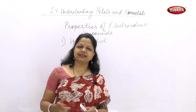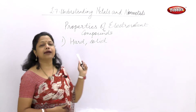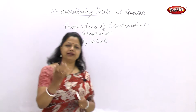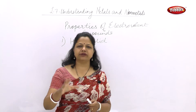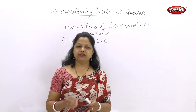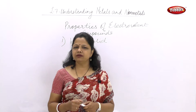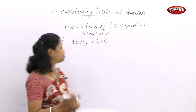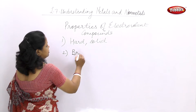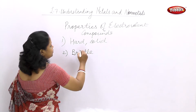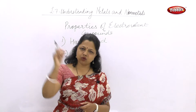These electrovalent compounds are hard and solid. But if I take a lump of salt in my hand and throw it down, it will break into small pieces. This means that electrovalent compounds are brittle. Brittle means something which can break under pressure or when thrown down.